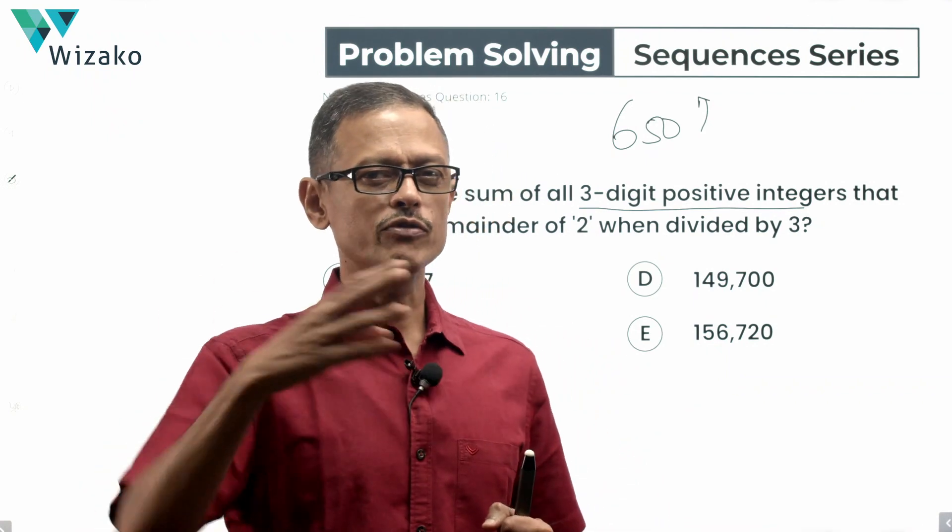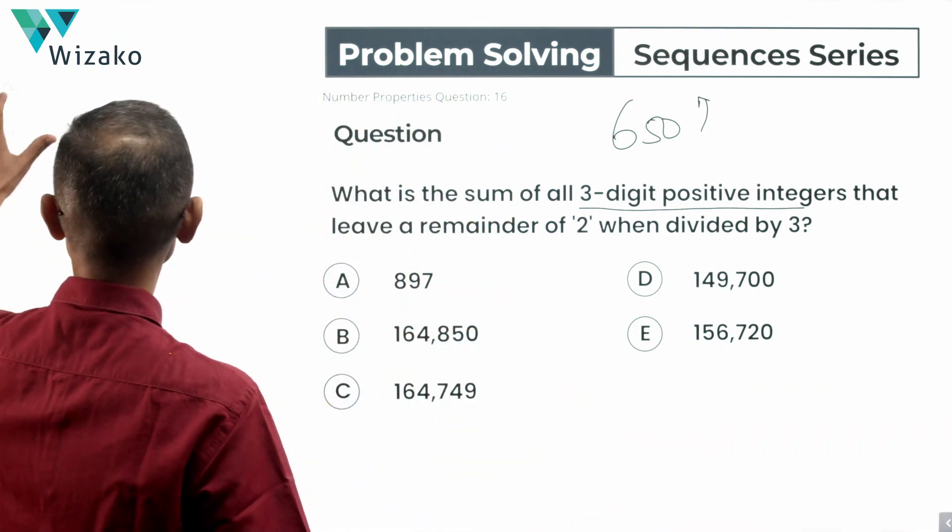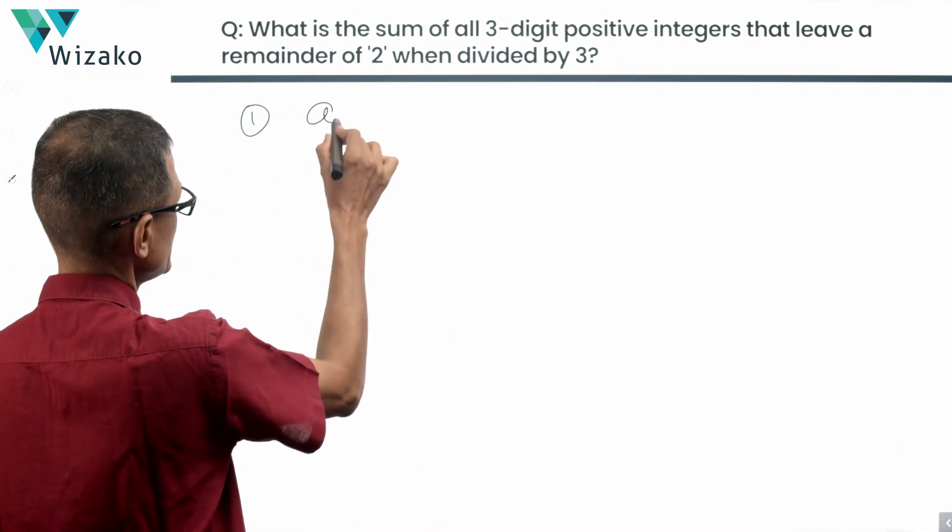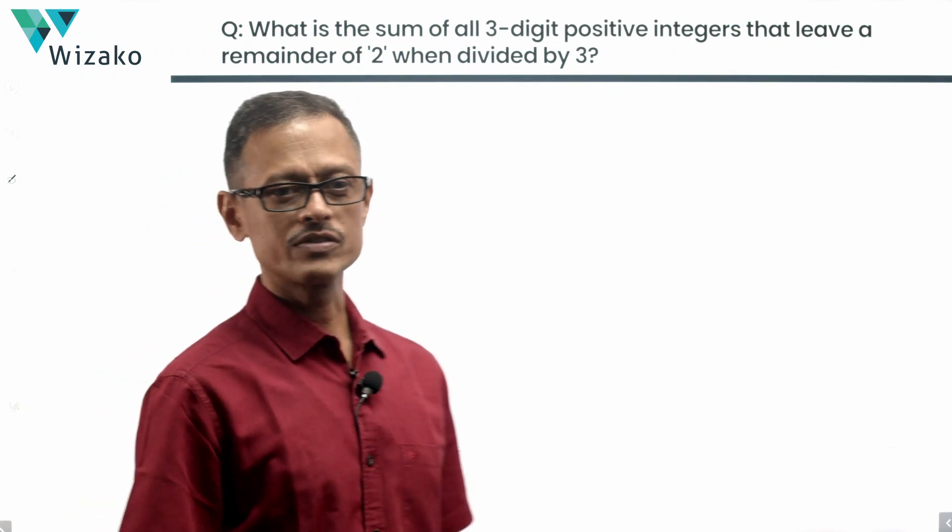How are we going to proceed? It's probably a four step process. In the first step, let's identify the first term of the sequence. That's step number one. We're going to find out a1, the first term of the sequence.